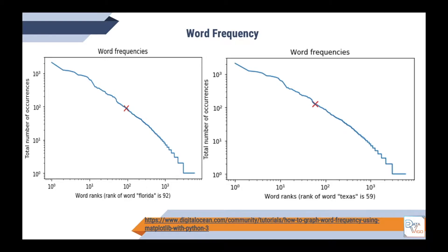The other thing you would be interested in is the visualization of word frequency. Here are two examples. In one, we have visualized the ranking of the word 'Florida' in the text, which is 92, and another for 'Texas', which is 59. This means Texas has actually been repeated more than Florida in the text we have.